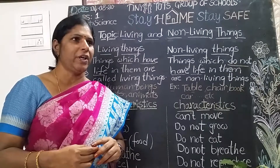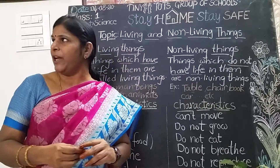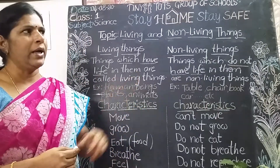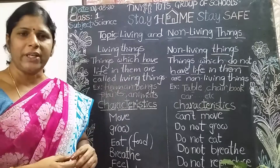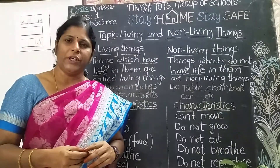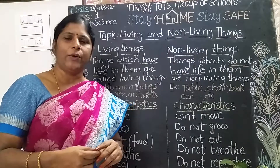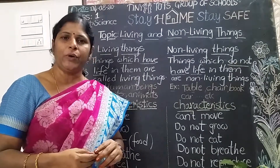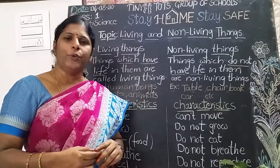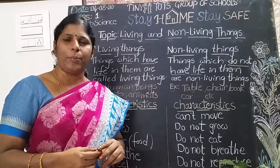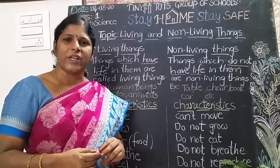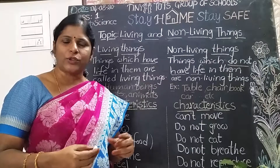I am able to see fan, sofa, chairs, table, and washing machine — so many things around me. Suppose if we go outside of the house, what do we observe? We observe lots of plants and trees, animals, buildings, houses, parks, and schools.